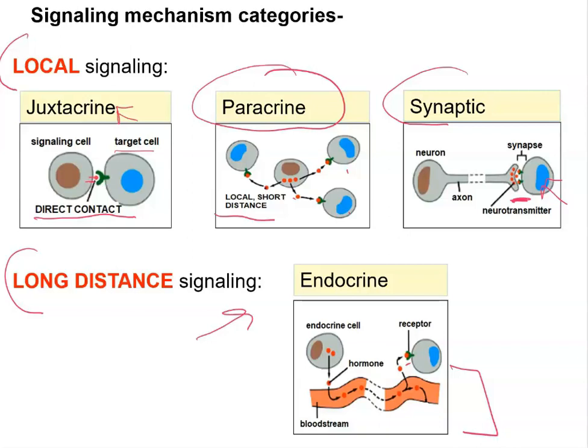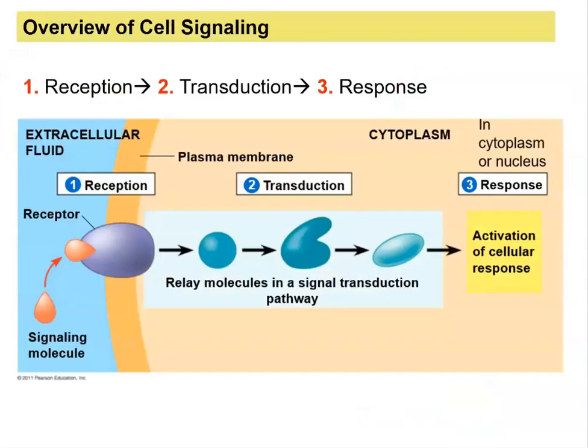For example, the pituitary gland releases human growth hormone into the blood, which reaches target cells. Those cells then begin dividing, and therefore you see the organism actually growing because it's making more cells. Next, we're going to discuss the steps involved in cell signaling.